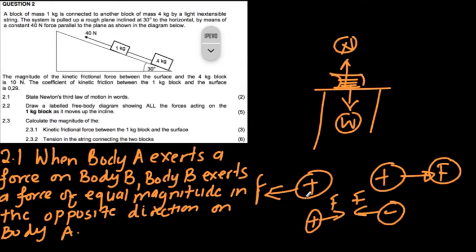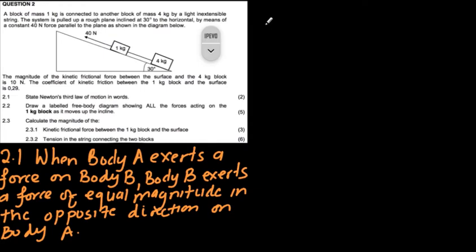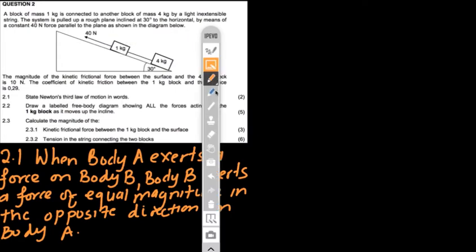Moving on to question 2.2: they ask us to draw a free body diagram of the 1 kg block. What I suggest is you draw the forces on the diagram given in the question paper, then transfer that diagram onto your answer script. That way you won't make mistakes, especially on a slope where the weight and normal force placement often go wrong.